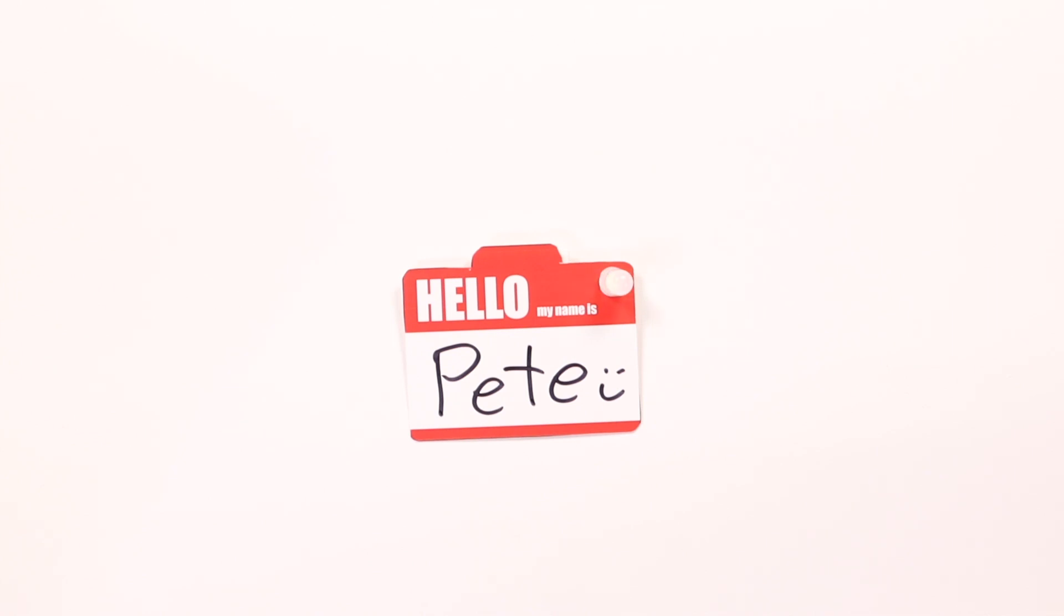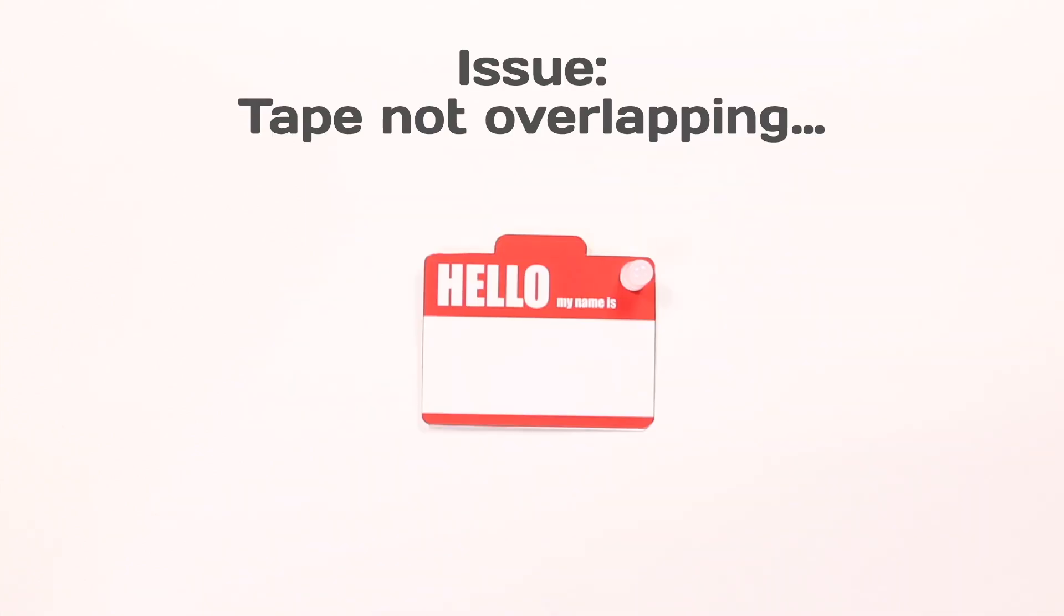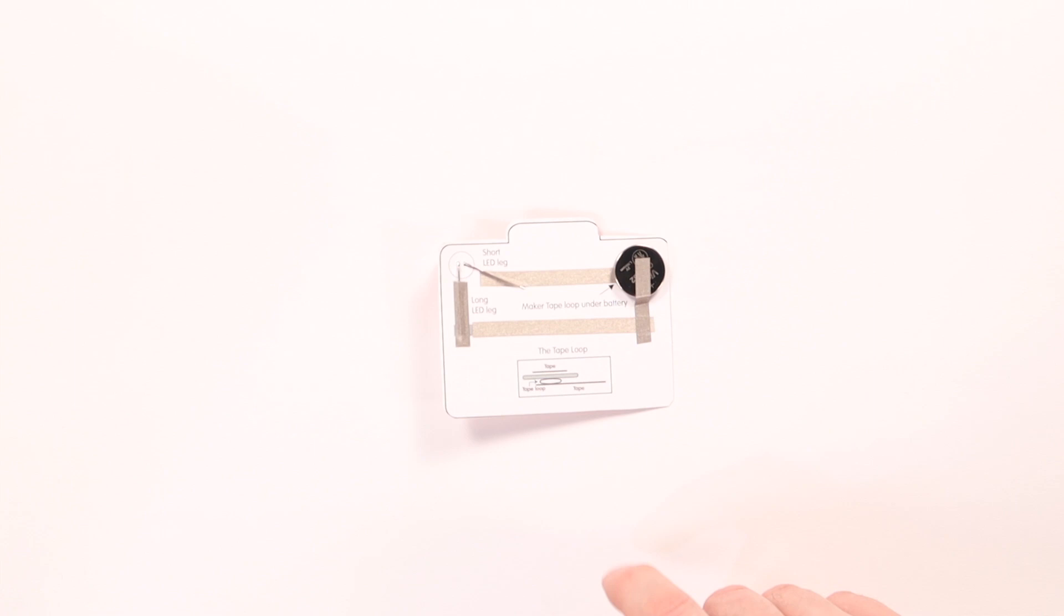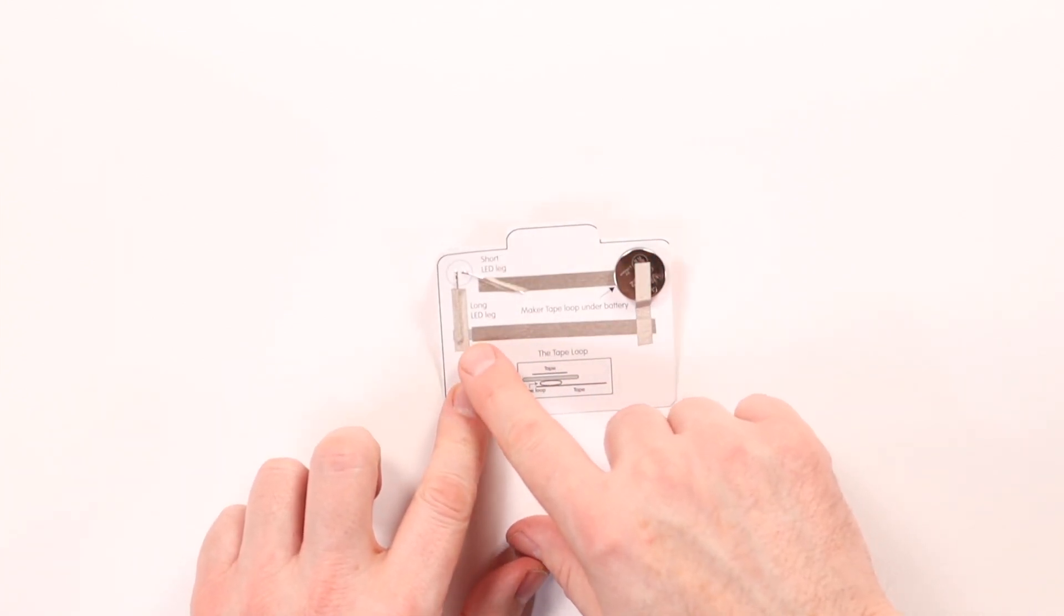Let's see what can go wrong. This badge does not light up. Let's take a look at the circuit. Okay, so it looks like the LED legs are covered okay. We've got tape running to the bottom and top of the battery.